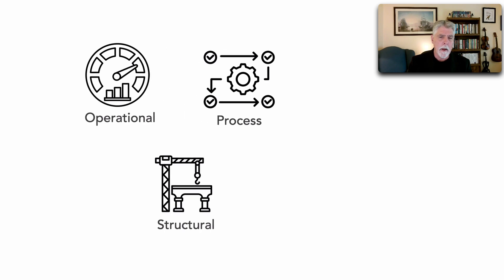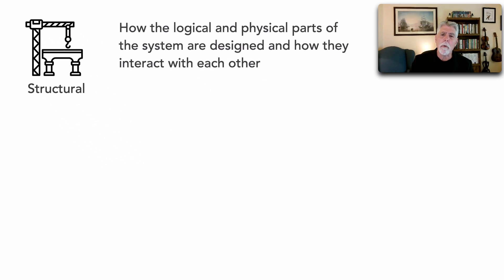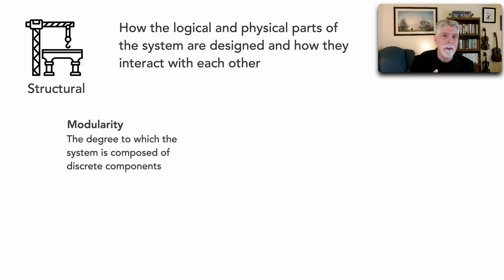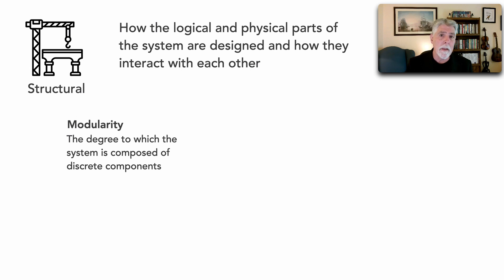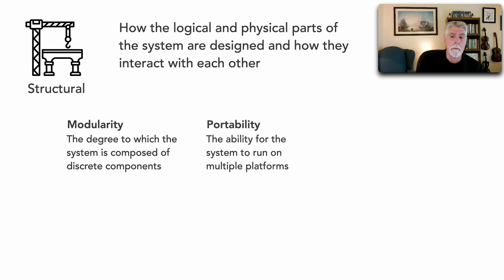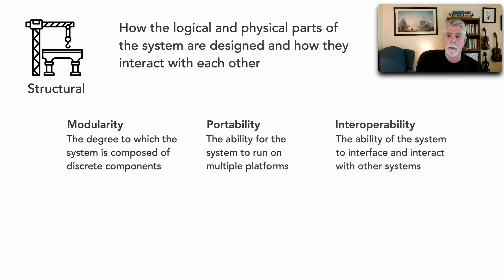There's one more category: structural characteristics. These describe how the logical and physical parts of the system are designed and how they interact with each other. The most common is modularity — the degree to which the system is composed of discrete components, either logical or physical. We can still have modularity within a monolithic system; a modular monolith is a fantastic example. Also portability — the ability of the system to run on multiple platforms — and interoperability, the ability of the system to interface and interact with other systems, like third-party services or vendors.